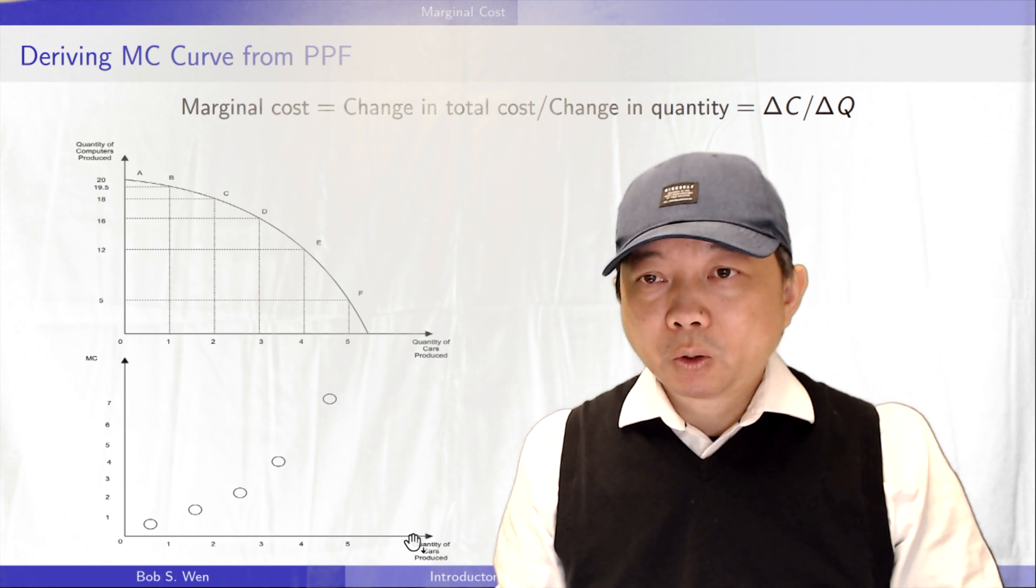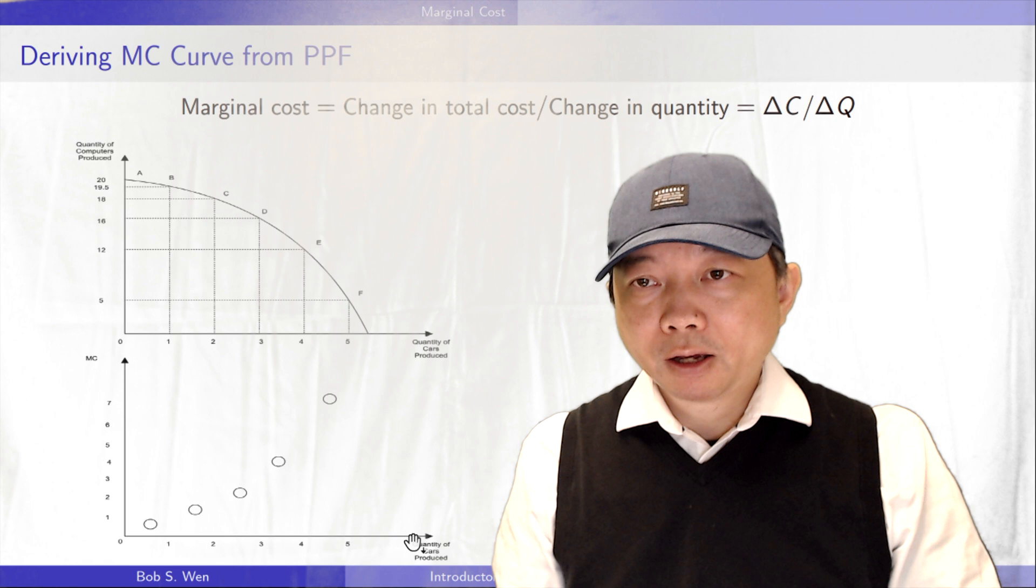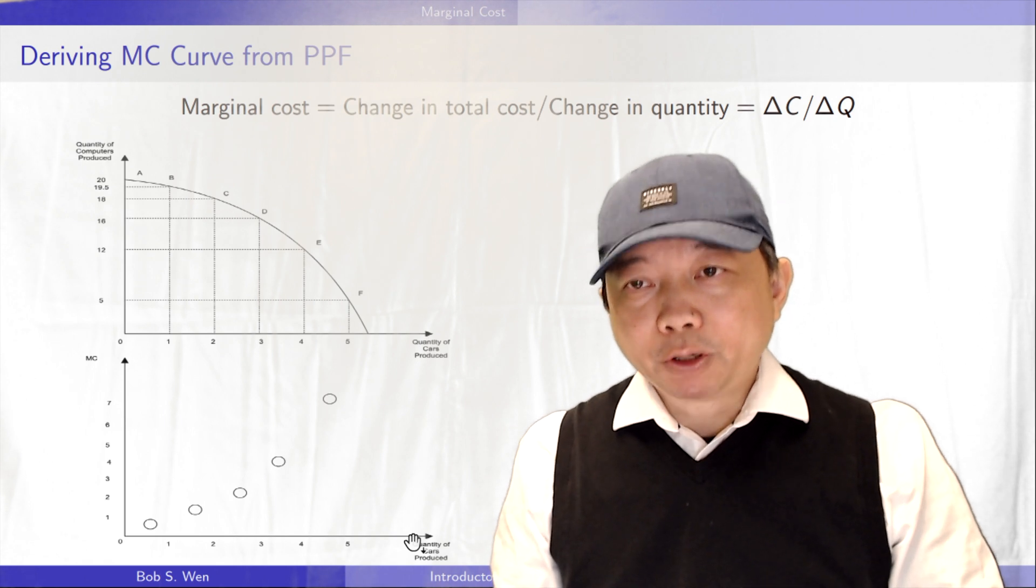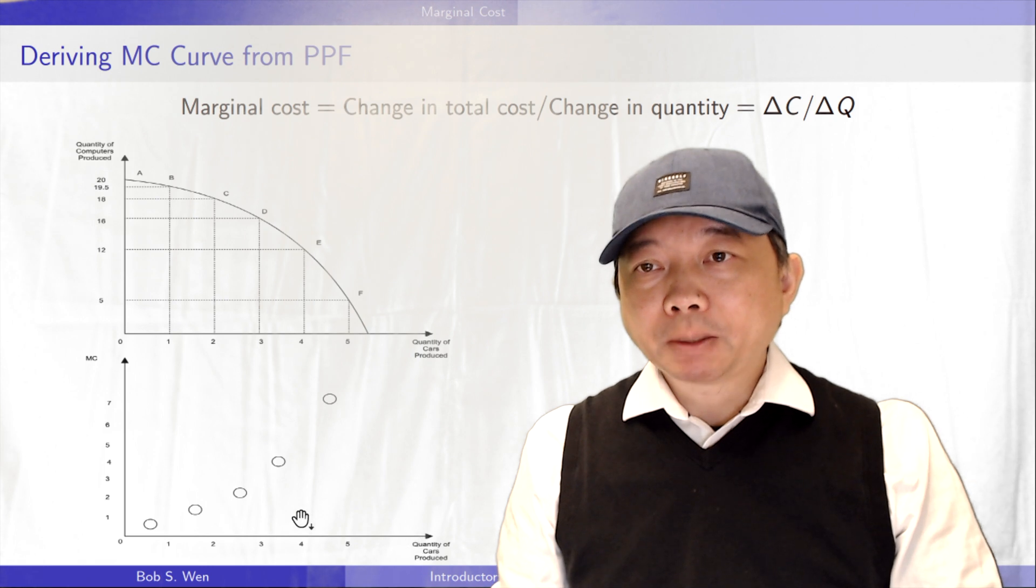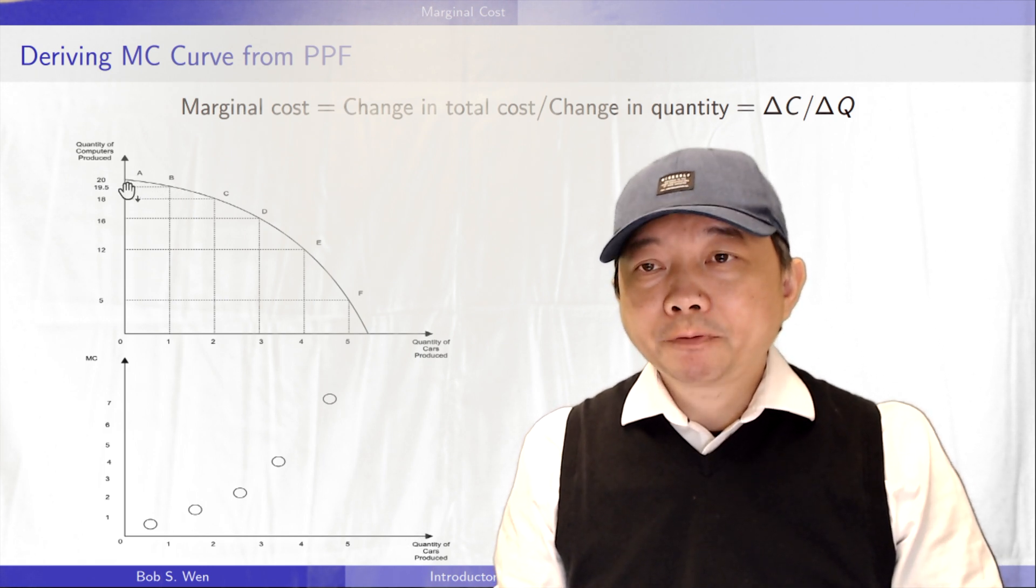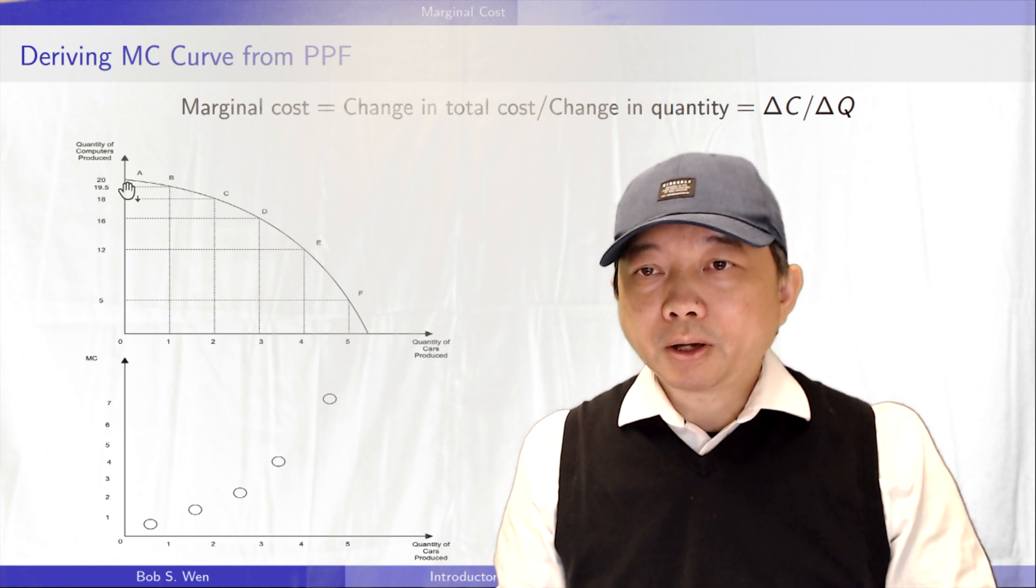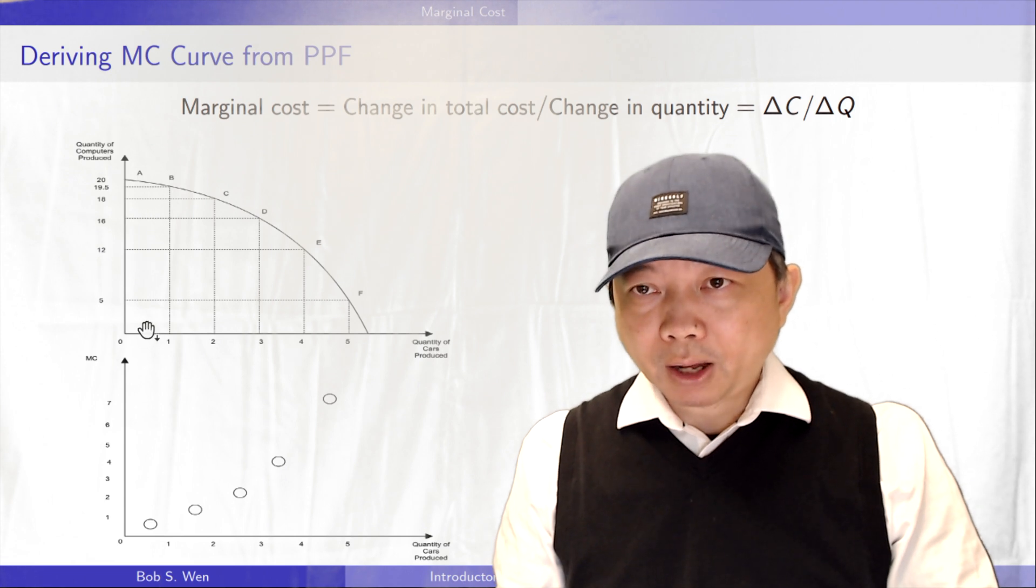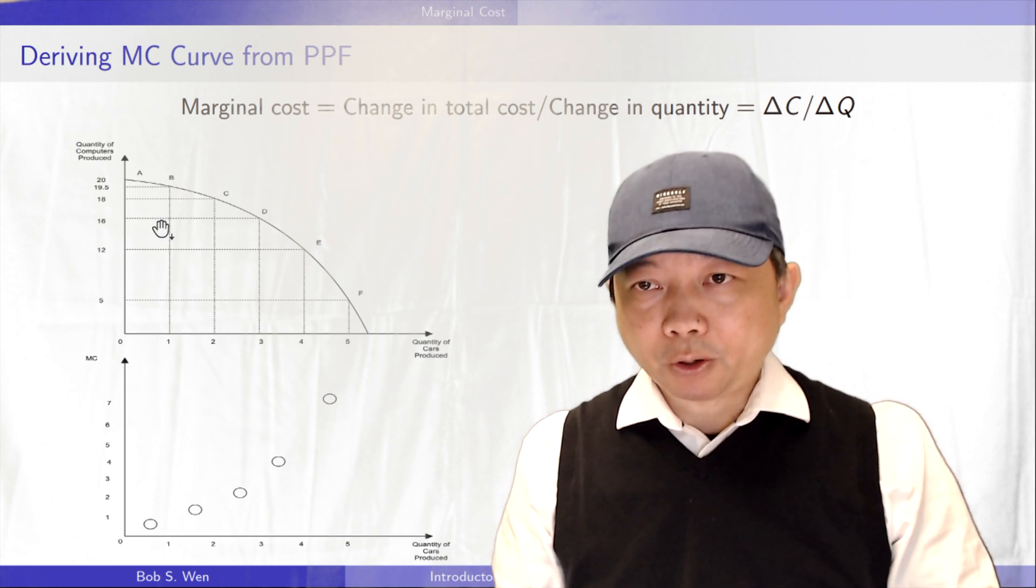In practice, when we derive the marginal cost curve from the PPF, we use the averages. Between point A and point B on the PPF, we have to give up an average of 0.5 units of computers to produce one more car. So on the marginal cost graph, we plot 0.5 between 0 and 1.